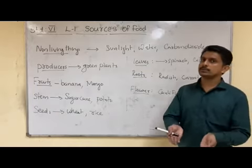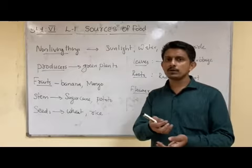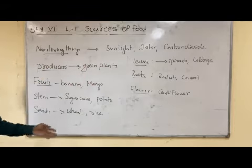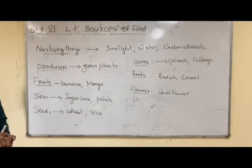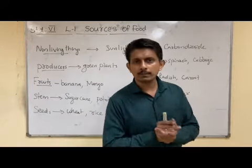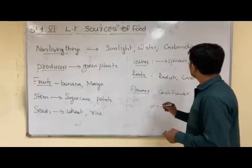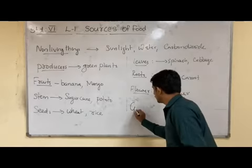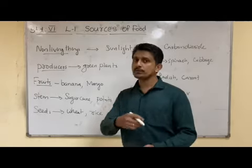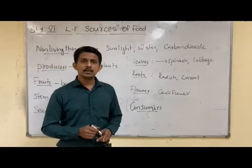These stored food items are consumed by some other category — for example, human beings or animals. They consume the food items which are stored by these plants. So they are commonly known as consumers. They are known as consumers — consuming the food items stored by these plants.